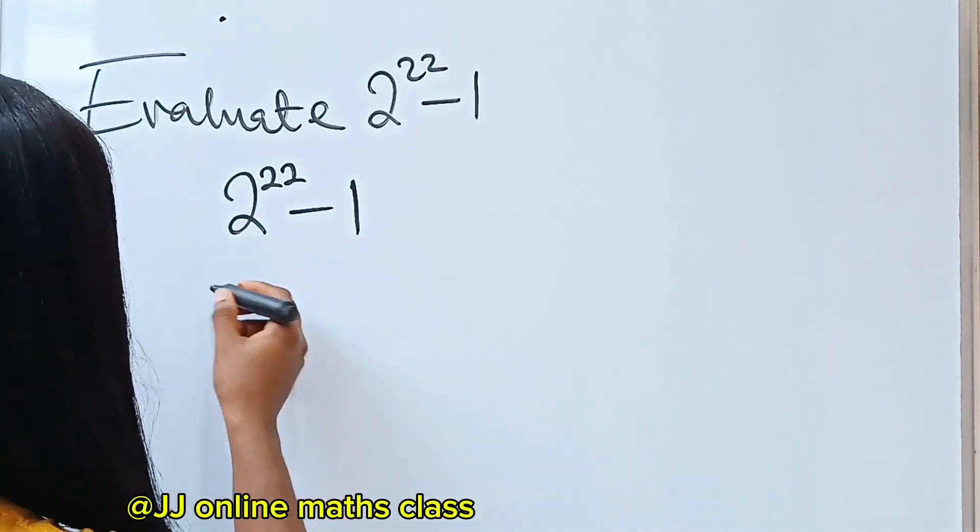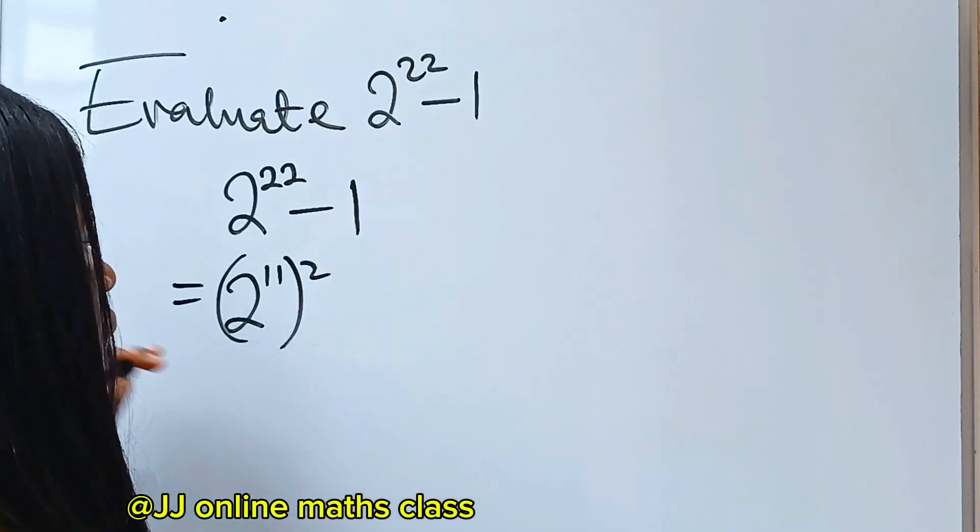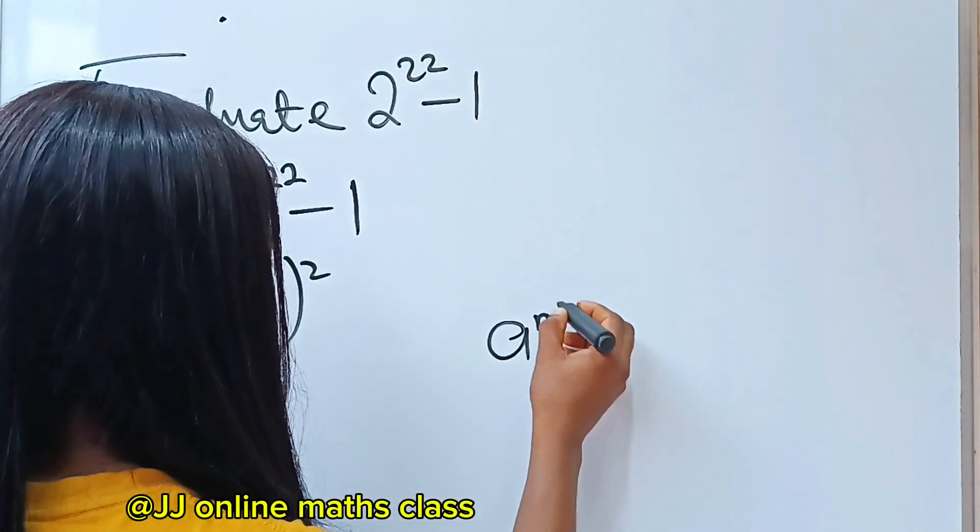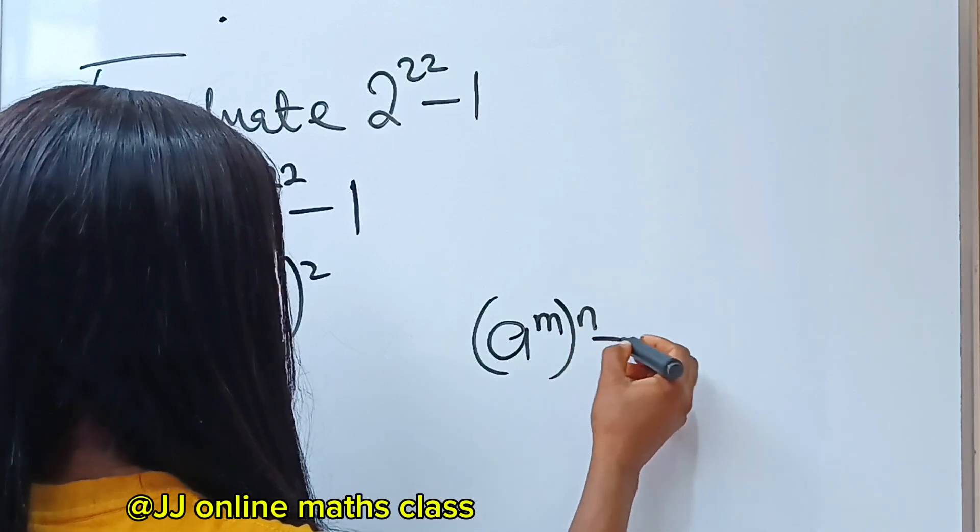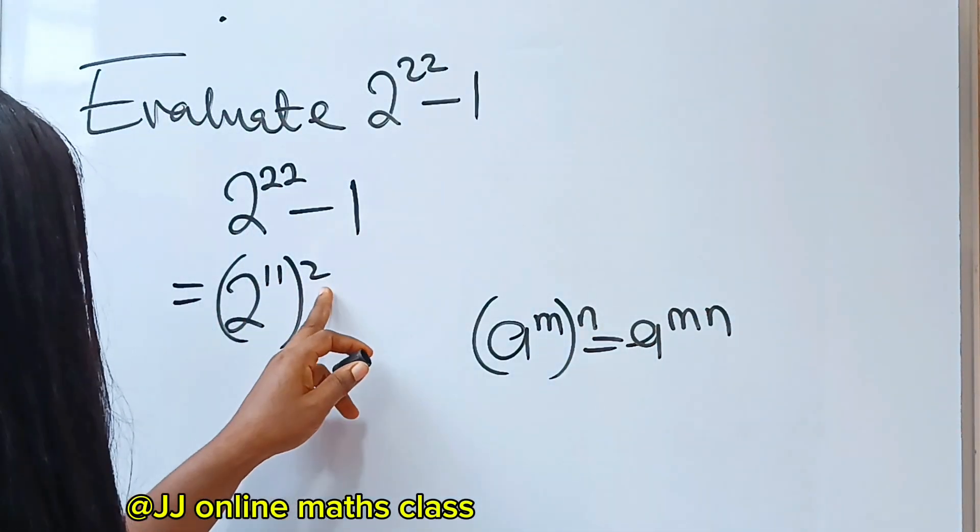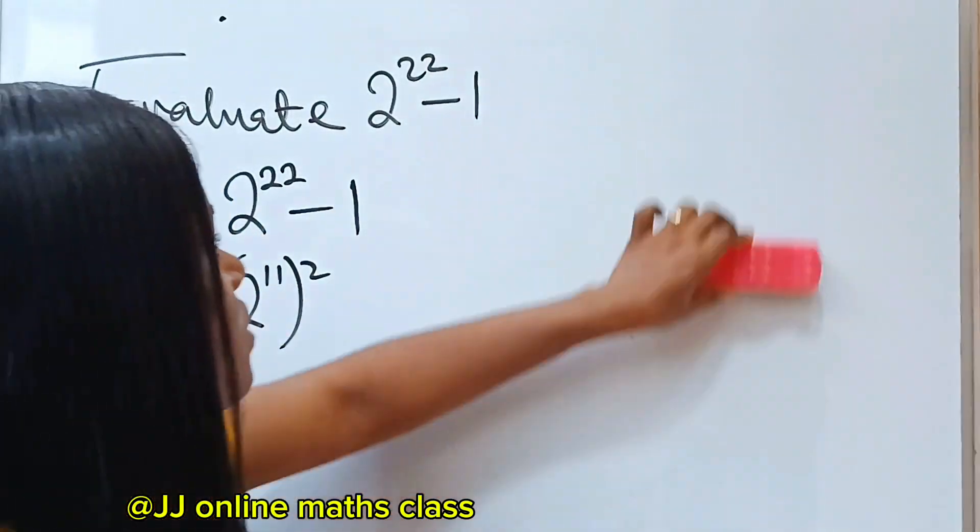You can express this as 2 to the power of 11 raised to the power of 2, right? Since the law of indices, A to the power of M raised to the power of N is equal to A to the power of M times N. 11 times 2 will still give us 22. So that is the first step.